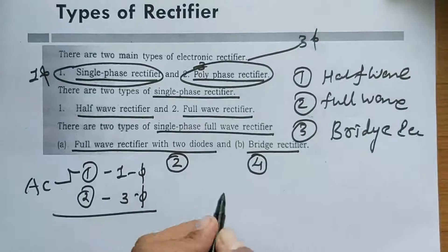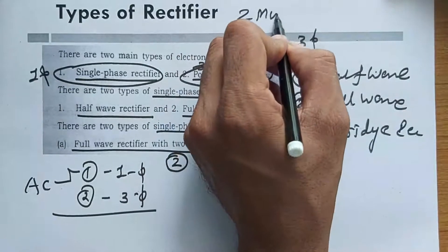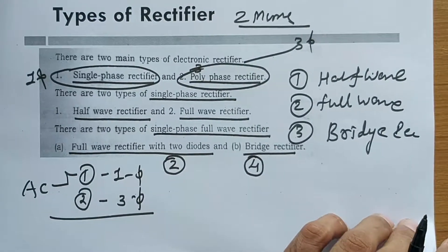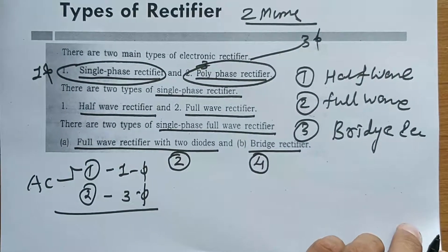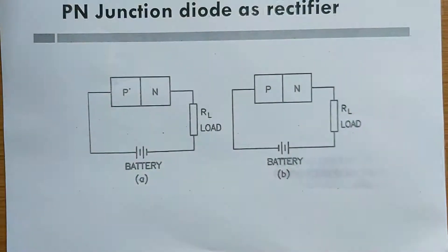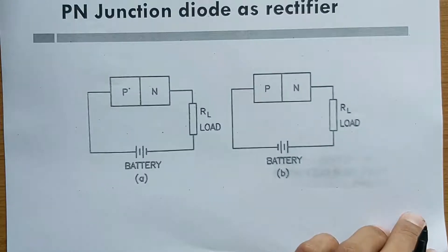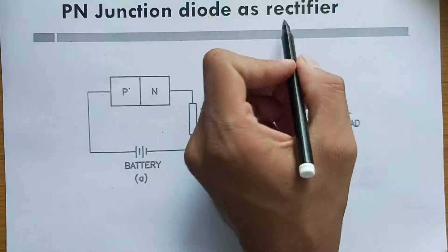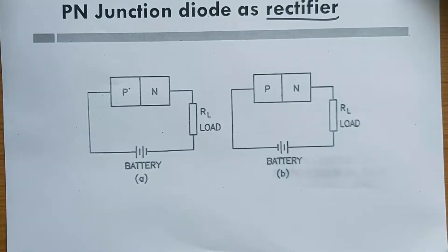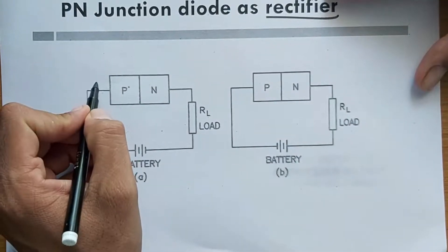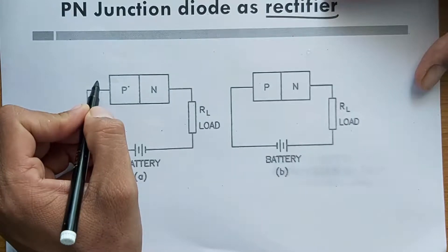This is the classification of rectifiers. You can be asked in the exam about the types of rectifiers, so remember this classification. Now, we will discuss how a PN junction diode is used as a rectifier — that is, the utilization of a PN junction diode as a rectifier.